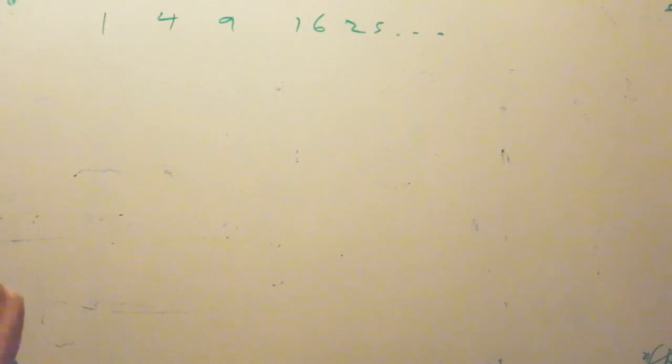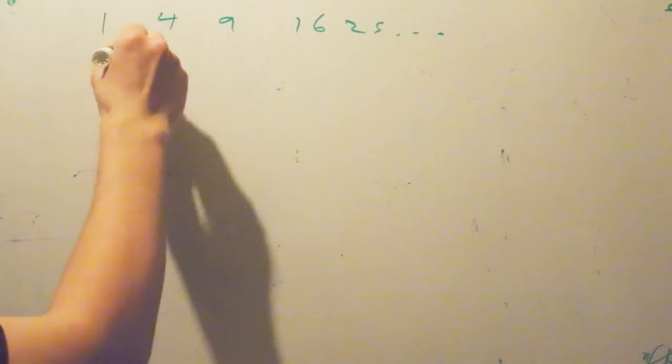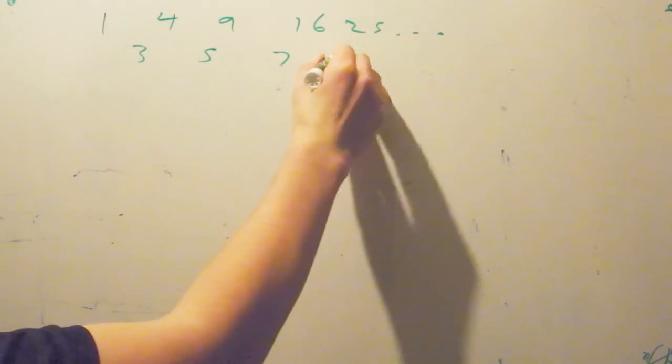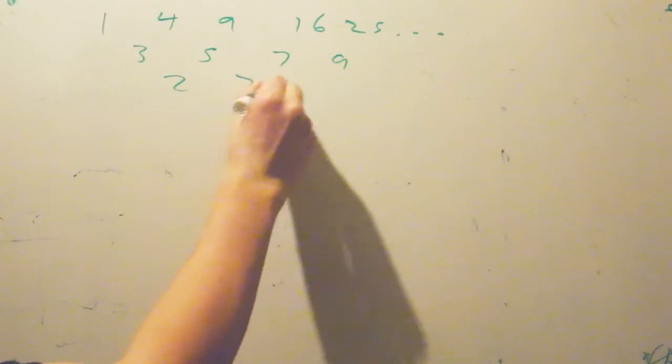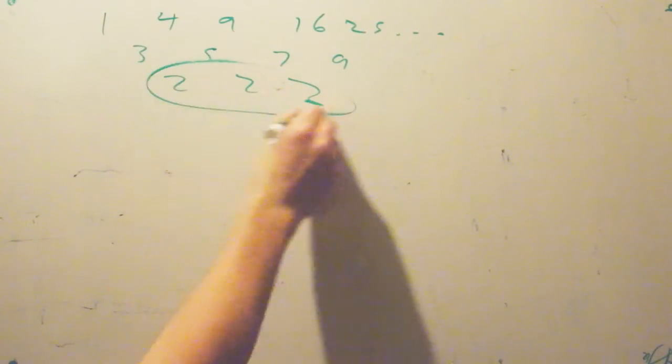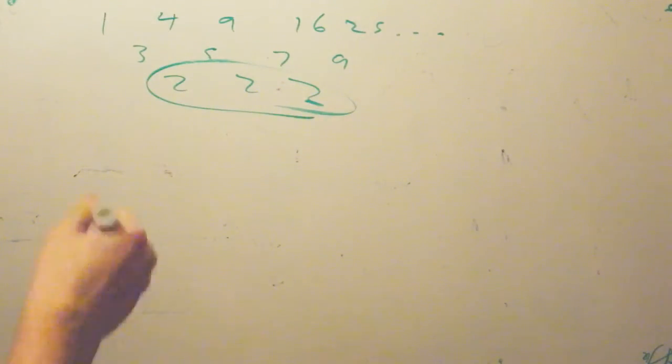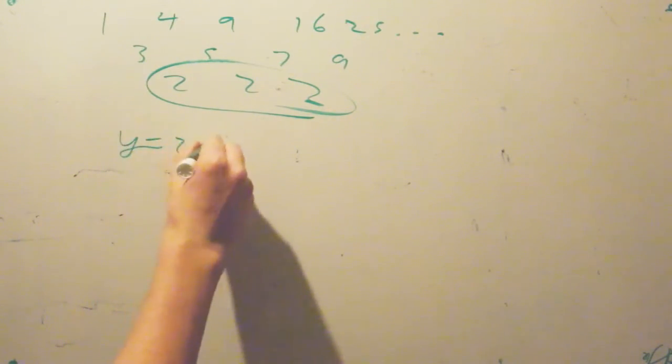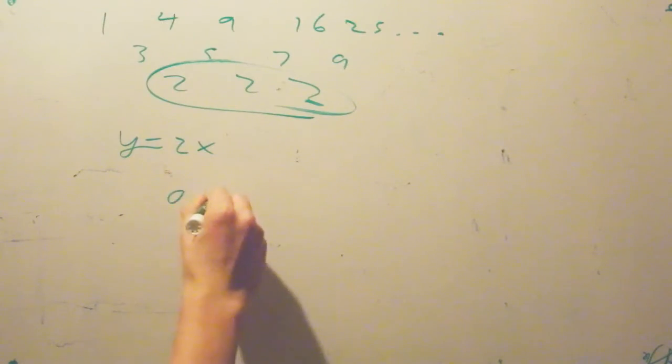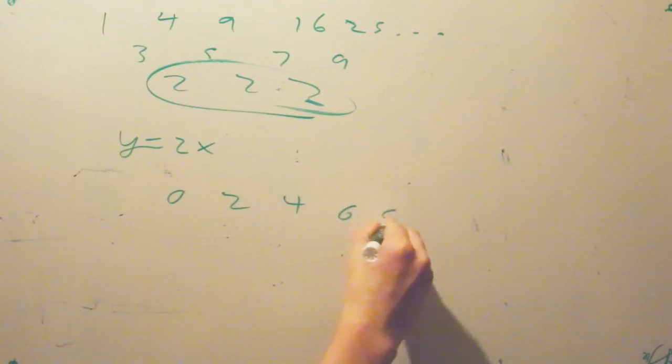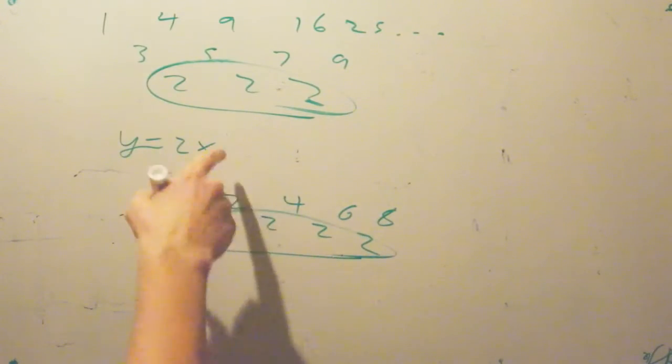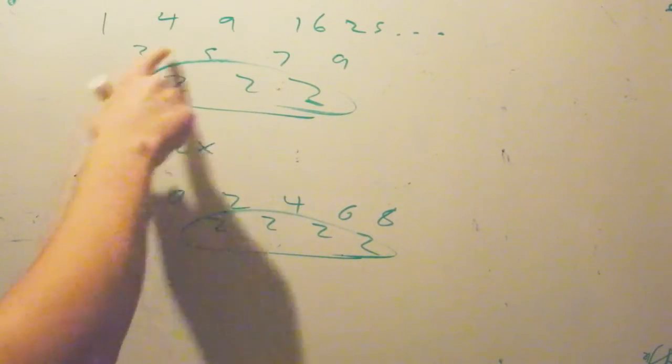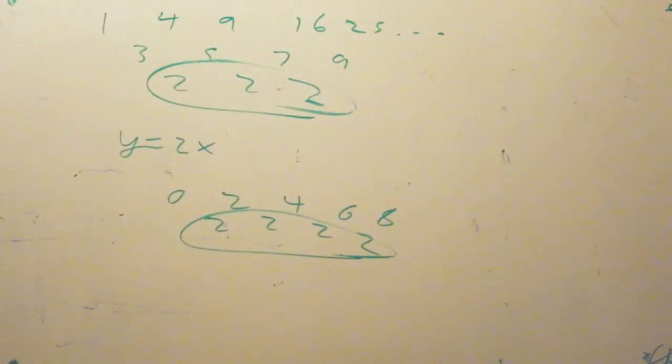Now, what makes this quadratic is the first differences are 3, 5, 7, 9, and the second differences are 2, 2, and 2, and these are all constant. For a constant graph, so for y equals 2x, you have 0, 2, 4, 6, 8, and all of these differences are constant. For a quadratic, all of the differences of differences must be constant.